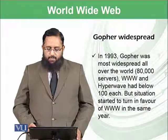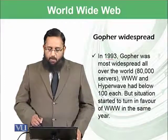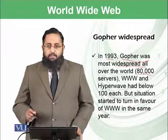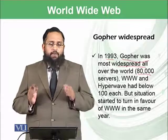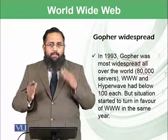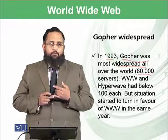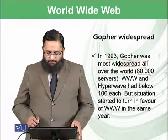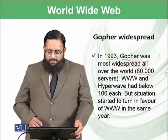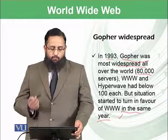However, before the Mosaic browser in 1993, Gopher was more widespread around the world. There were 80,000 Gopher servers available at one time in 1993, while less than 10 servers were available for World Wide Web and Hyper-G. But the situation started to turn in favor of World Wide Web in that same year, and by 1994 it experienced a tremendous boom.